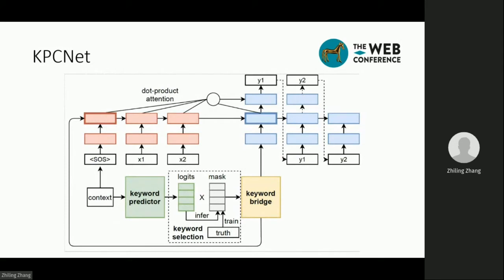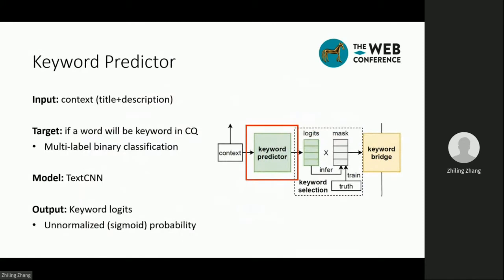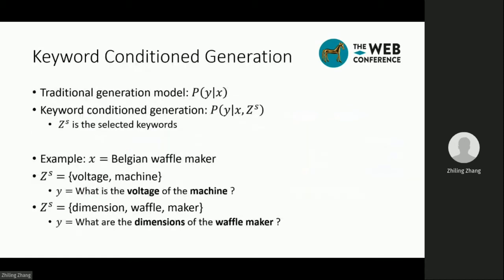As a result, we propose our model named KPCnet, a CQ generation model equipped with keyword-related modules. First, I want to introduce the keyword predictor. It takes the title and description as input. For each word in the dictionary, we predict if it will be a keyword in the generated question. So it is a multi-label binary classification problem. We use the TextCNN model for this, and we can get keyword logits as output, which are the unnormalized probabilities.